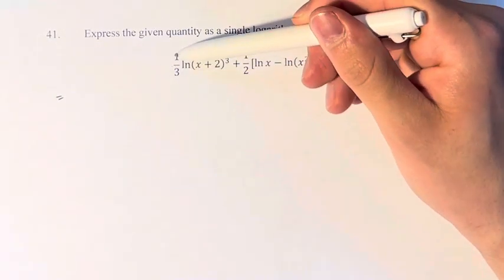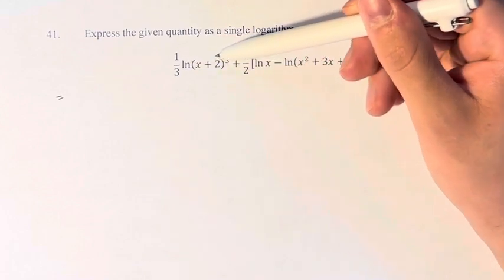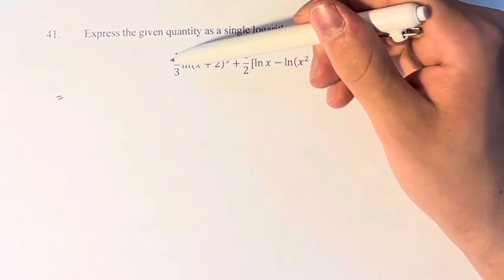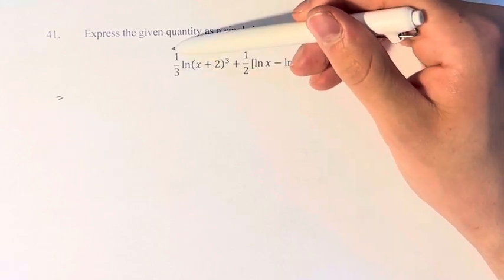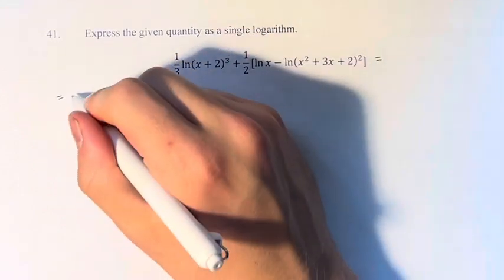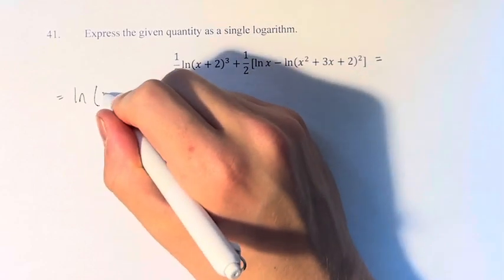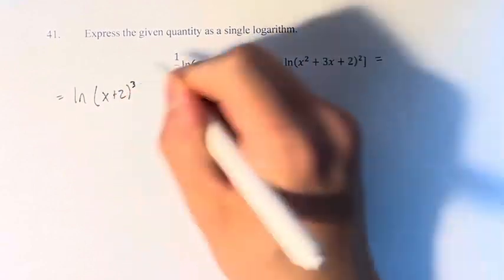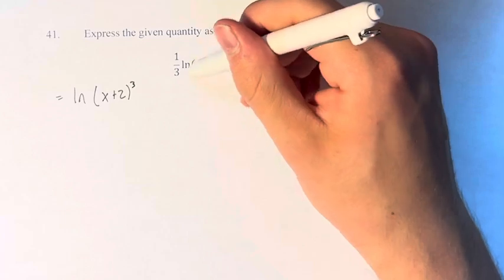So the first thing is here we have one-third times the natural log of x plus 2 cubed. What we do is when we have a number on the outside of a log we can bring it in as an exponent of whatever is inside. So this is the natural log of x plus 2 cubed raised to the one-third power.